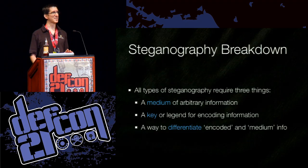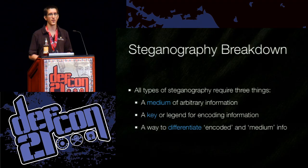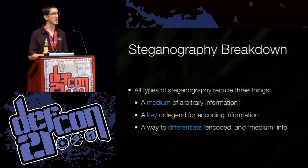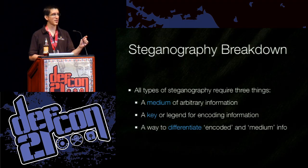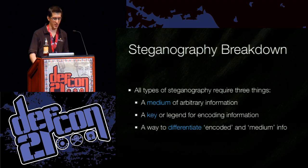So we talked about a couple of different types of steganography. They all have three things in common. Number one, you need a medium of arbitrary information — it could be your scalp, a tapestry, or a photograph. Number two, you need a key or a legend — a way to encode data, so if you encode this way it means that. And finally, you need a way to differentiate between the encoded information and the rest of the medium information that is expected to be there. These three things make up steganography.